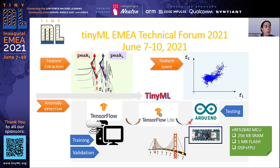Once we have created our neural network model, we can apply a TensorFlow Lite transformation, which allows us to finally deploy the model to an embedded device — for example, the Arduino Nano 33 BLE Sense platform, which we used in our case, since it is similar to low-cost and low-power devices that can be installed in structures.